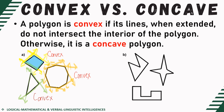On the other hand, looking at the figures in set B, as you can see in my first example, after extending the side of this first figure in set B, it already passes through the interior point of the polygon. Therefore, this is considered a concave polygon.